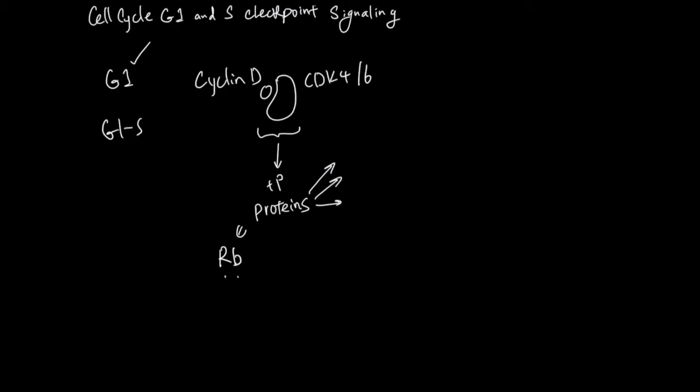You have the G1S checkpoint and you have the S checkpoint. S checkpoint makes sure that the DNA duplication is good. But for the DNA duplication to start, you have to make sure the proteins for duplication, rewinding of the DNA, etc., are ready. And G1S checkpoint makes sure that's true.